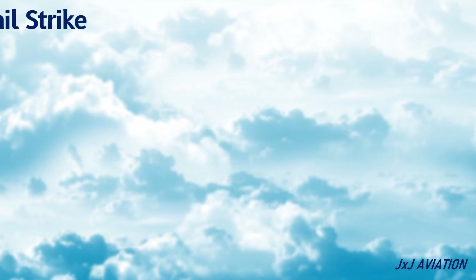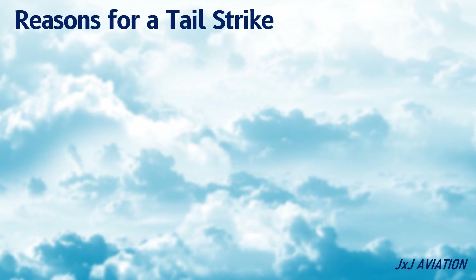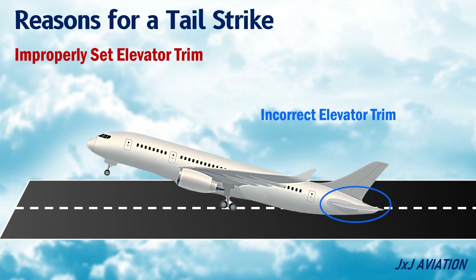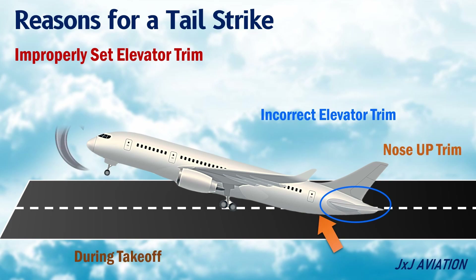Reasons for a tail strike. Improperly set elevator trim: when the elevator trim is not set correctly as per the load distribution of the aircraft, it may lead to a tail strike during takeoff. This would happen if the aircraft is incorrectly trimmed for a nose-up condition during takeoff. During rotation, the aircraft will pitch up faster than the usual rate, and if not controlled, it can result in a tail strike.